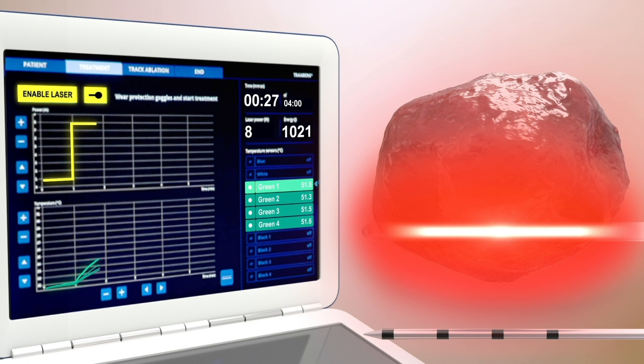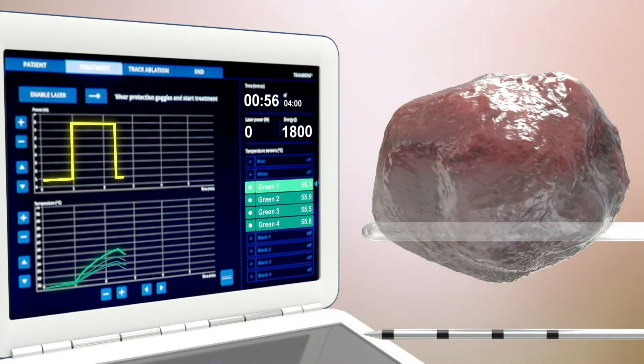Target temperatures are monitored in real-time using the temperature probes. Instant cell death is achieved at 60 degrees Celsius.